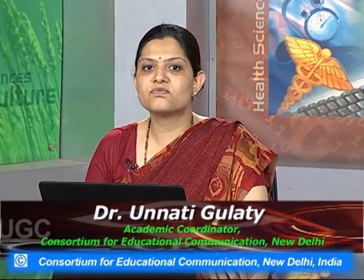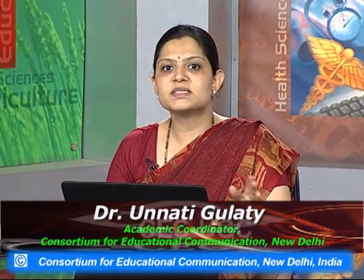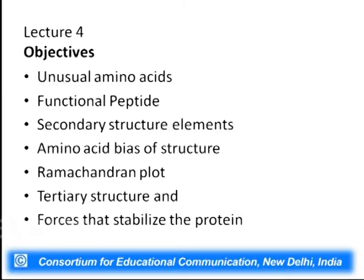Thank you. Students, we have been talking about protein structure. We started off with amino acids, their chemical properties, and how they formed the polypeptide by joining through condensation reactions giving rise to the peptide bond. Today we will discuss unusual amino acids, secondary structure elements, the Ramachandran plot, and tertiary and quaternary structures, along with the forces that stabilize proteins.